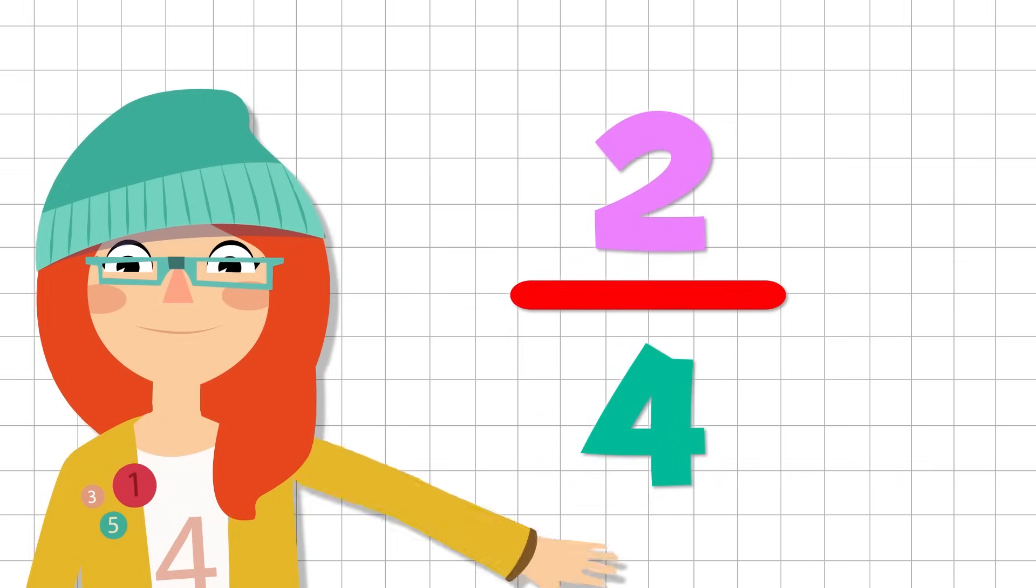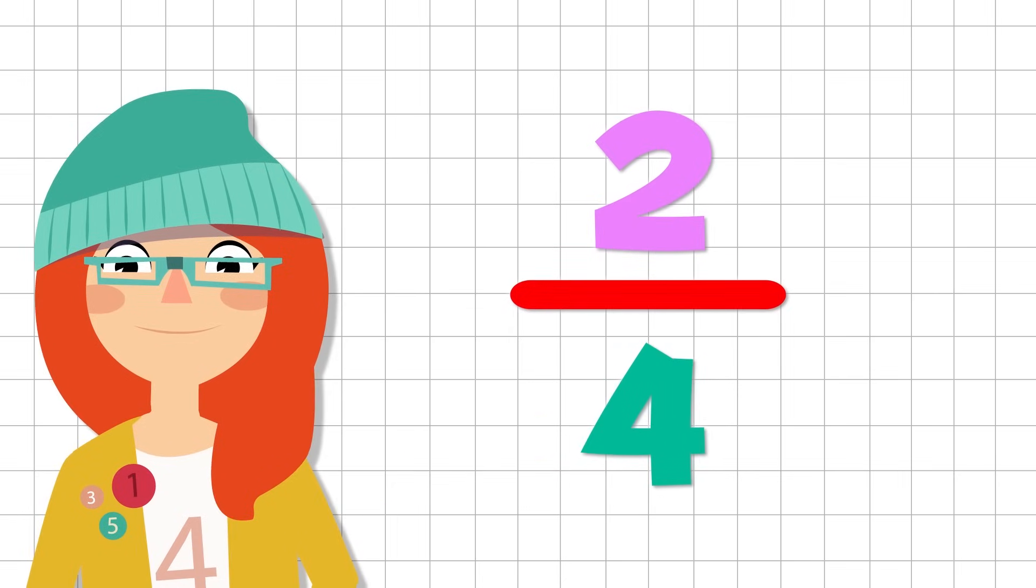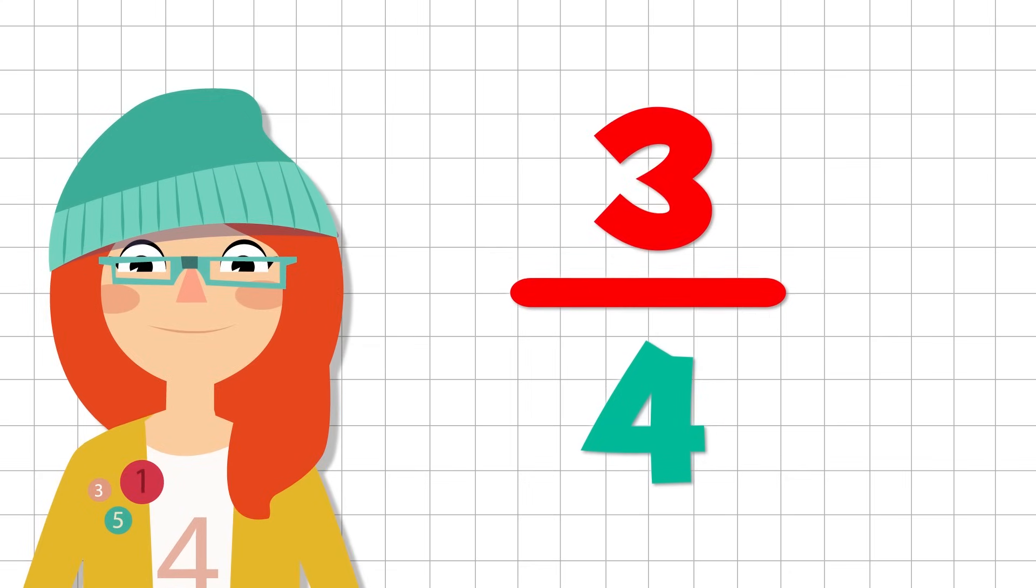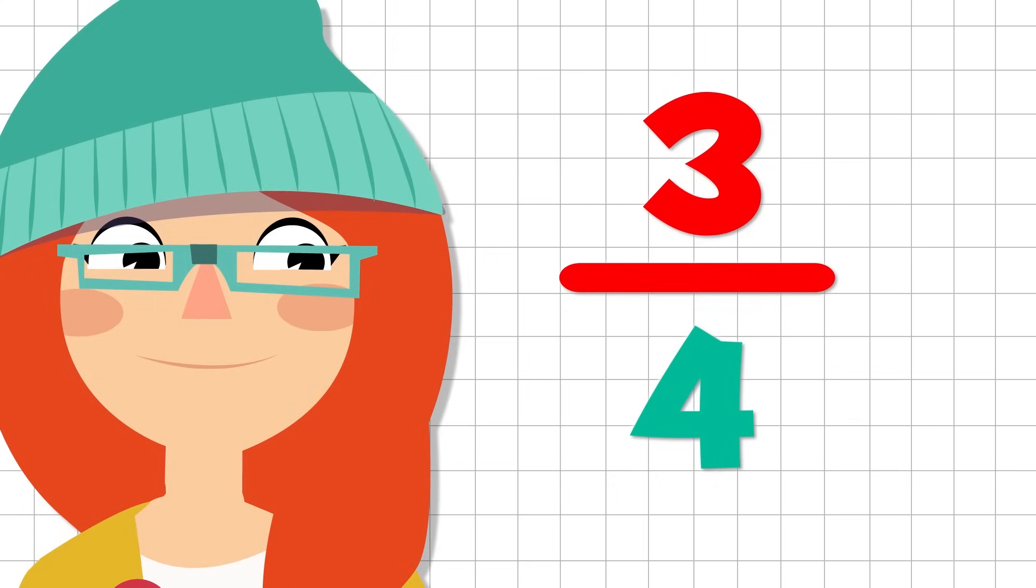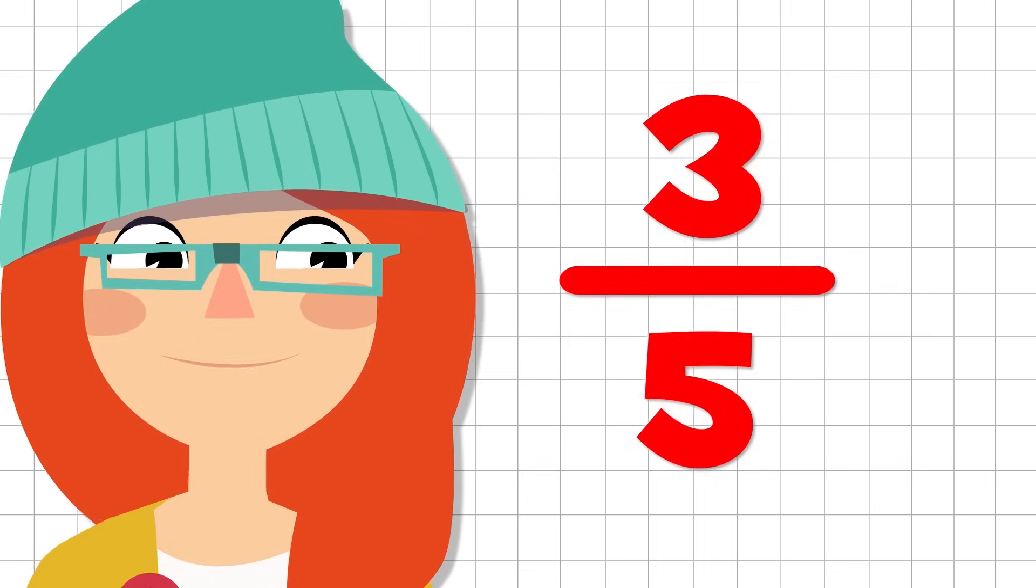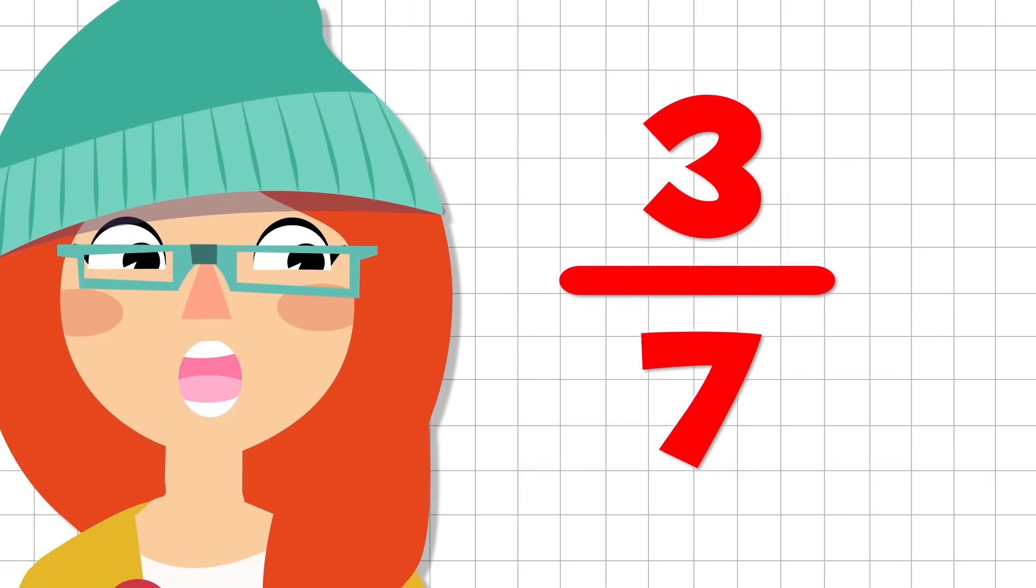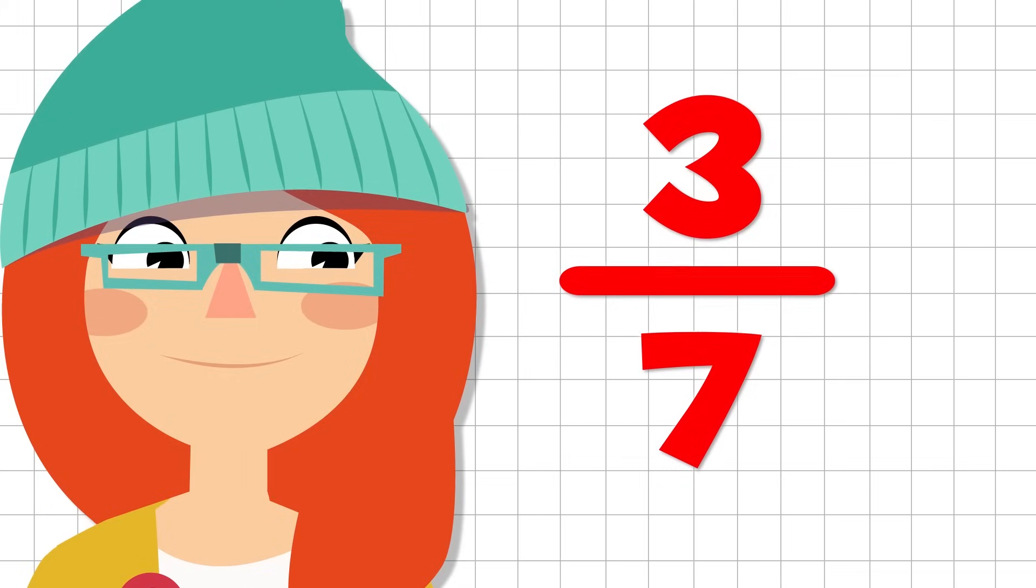When the denominator is a four, we say fourths. This fraction would be two fourths. And this one? Very well! Three fourths! And so on. If the denominator is a five, we say fifths. If it's a six, we say sixths. If it is a seven, we say sevenths. If it's an eight, we say eighths.